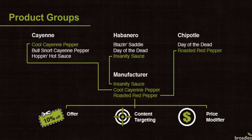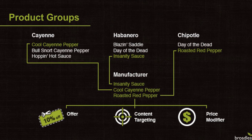For instance, what if we wanted to create an offer targeting hot sauces produced by a particular manufacturer? Since the targeted hot sauces could be located in a multitude of categories, we need a more precise and powerful way of grouping products. To meet this need, Broadleaf introduces product groups — dynamic, reusable, non-customer-facing meta-categories intended to be used for offers, price modifiers, and content targeting.